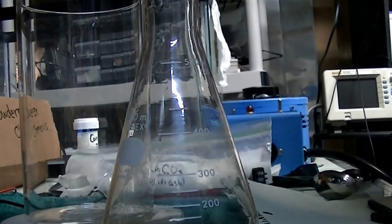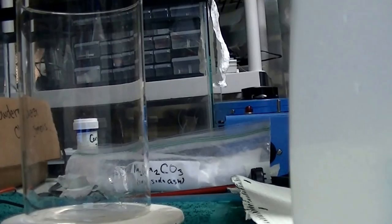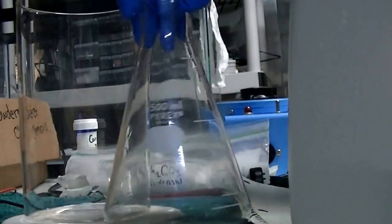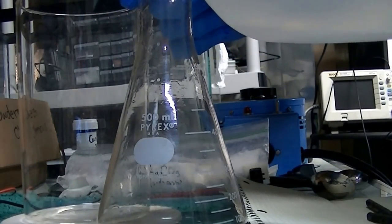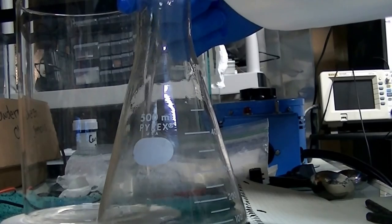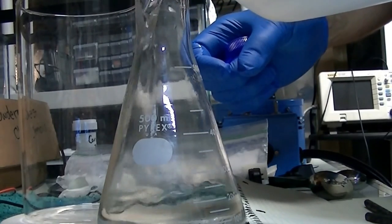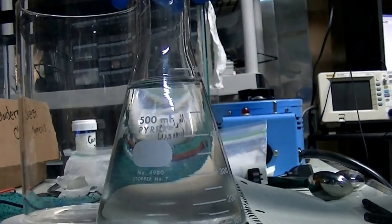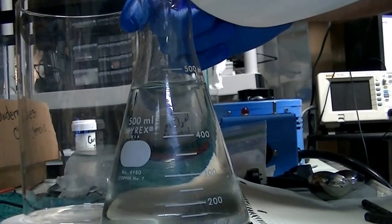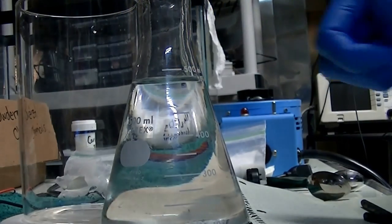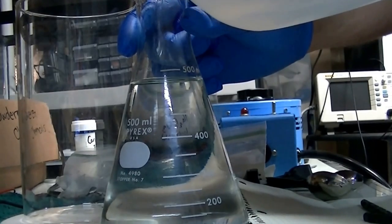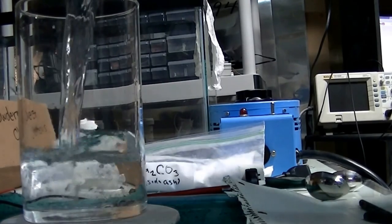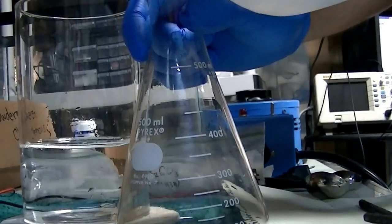Now I'm measuring out one liter of distilled water and it's an approximation, all these will be an approximation. The flask I have has a 5% margin of error at 500 milliliters and I'm just measuring out two of those. So do the best you can with what you got.